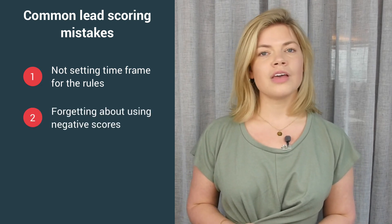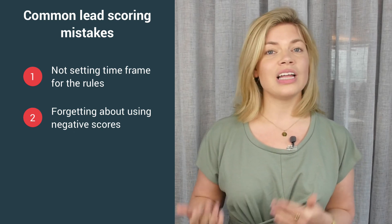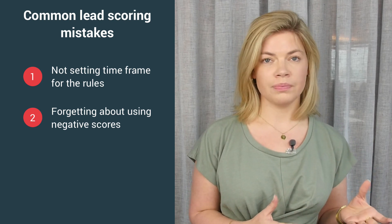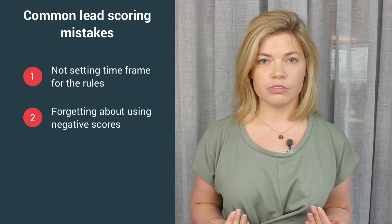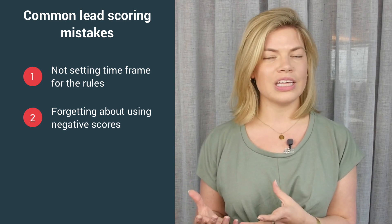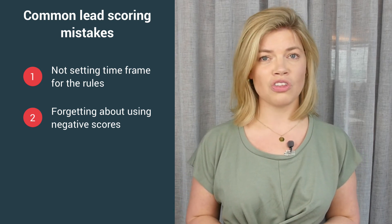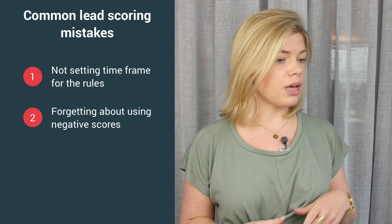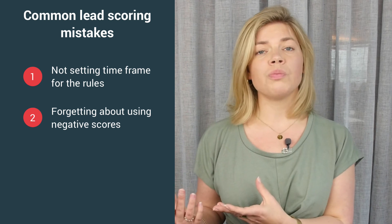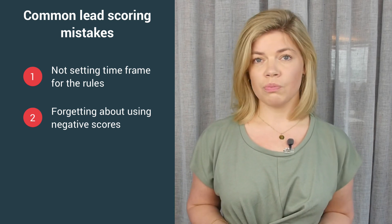Number two: forgetting about using negative scores. Just as lead scoring is about finding relevant leads, you can also identify the ones that are not relevant at all. You do that by removing points from the lead when they fulfill a score rule that you don't think is likely to lead to a sale. It could be, for example, if the lead has put 'student' as their job title, if they're from a country where you can't ship your product, or if they visited your career page looking for a job — then points would be removed from their lead score.